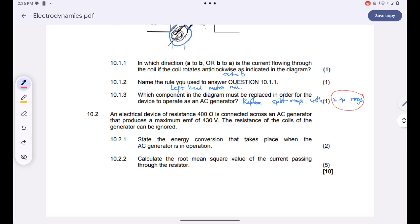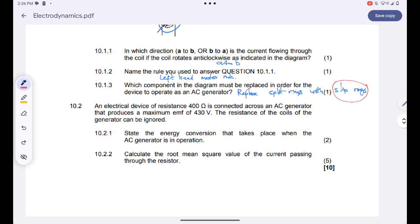We are told that an electrical device of resistance of 400 ohms is connected across an AC generator that produces a maximum EMF of 430 volts. The resistance of the coil of the generator can be ignored.